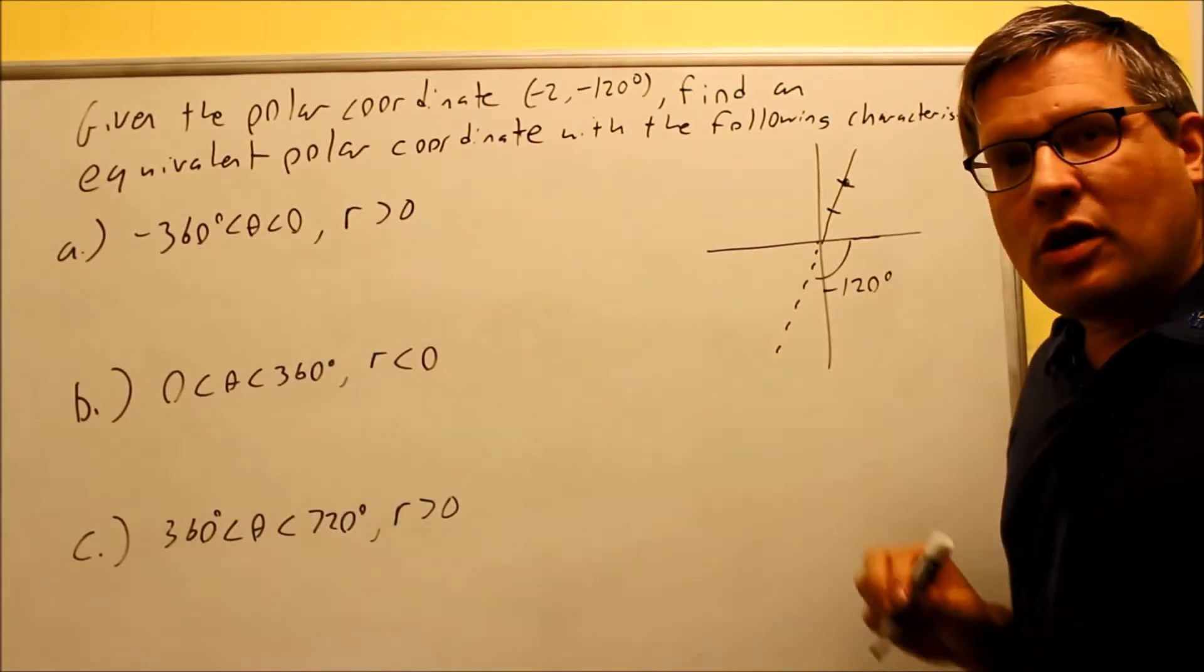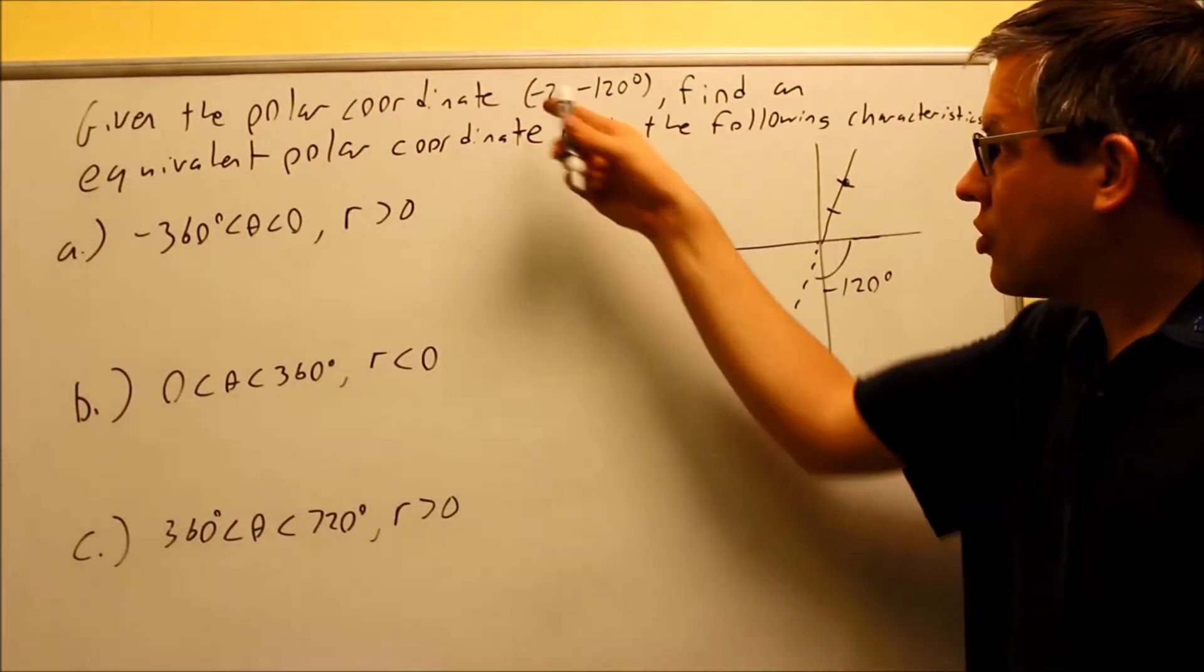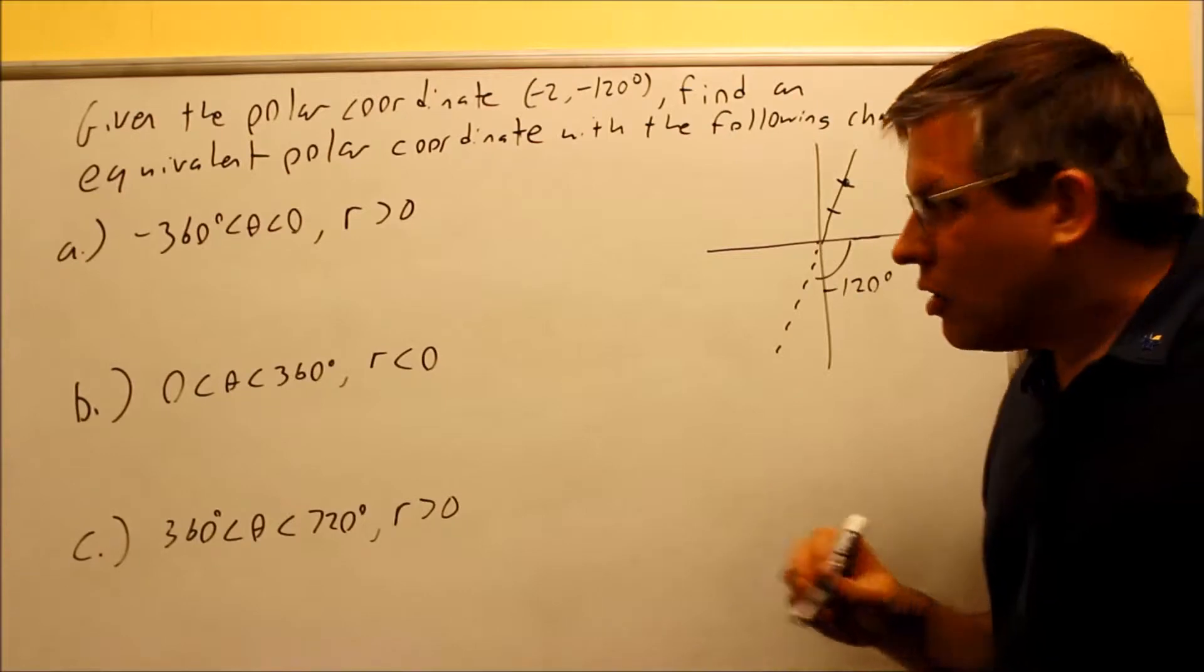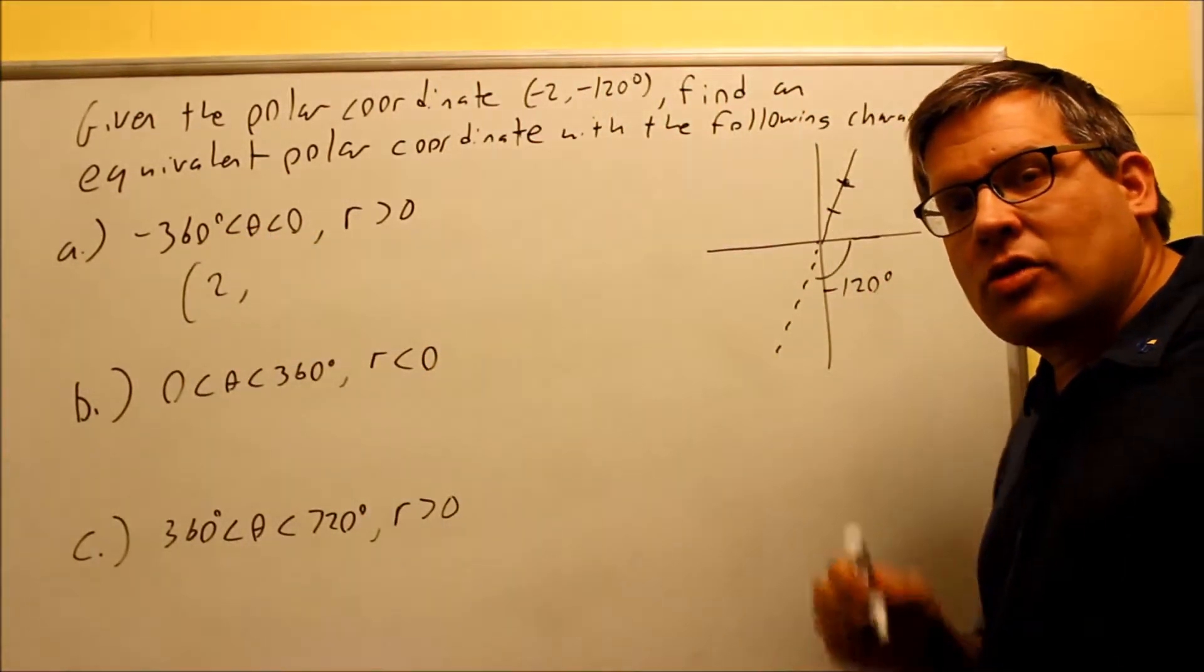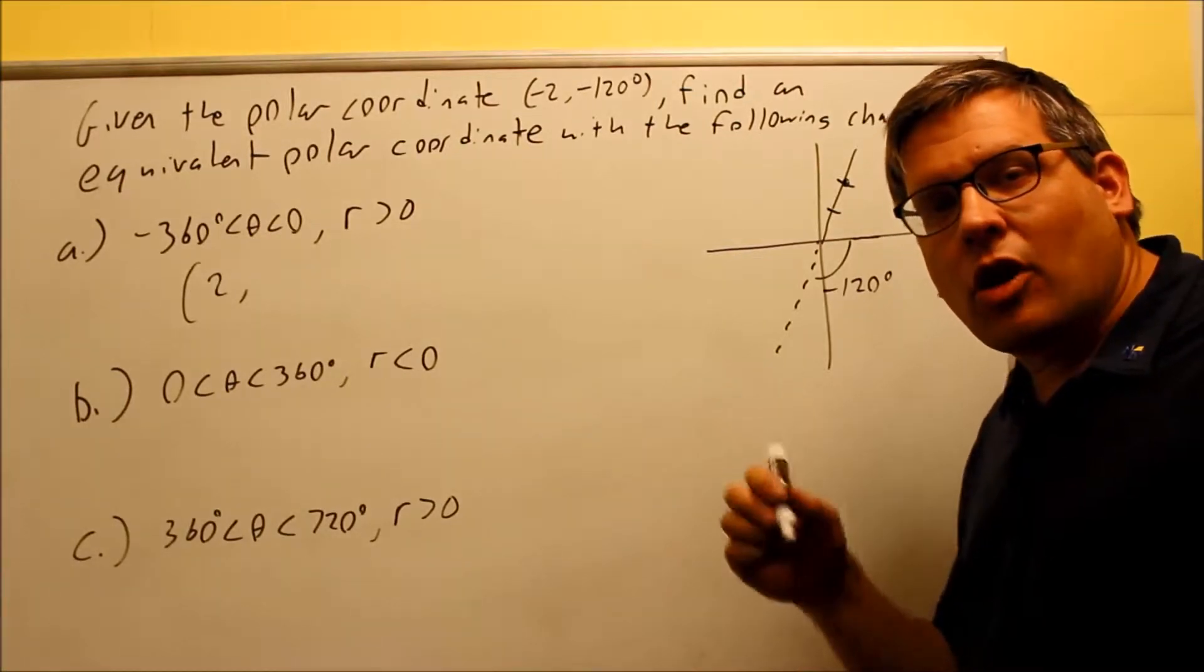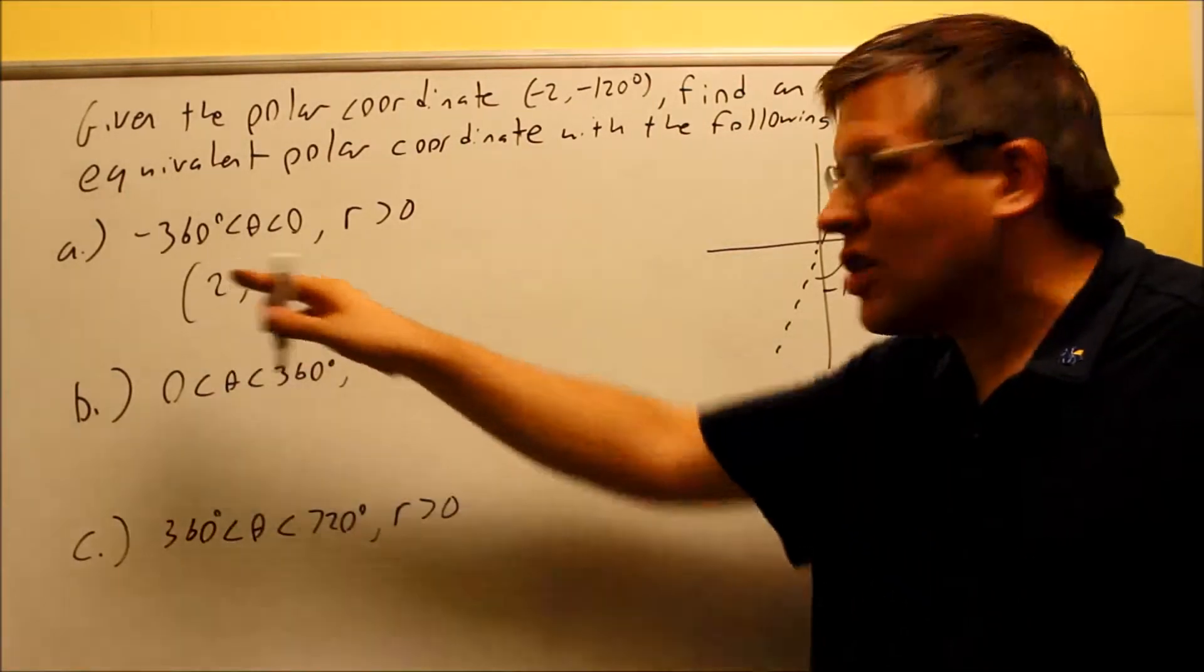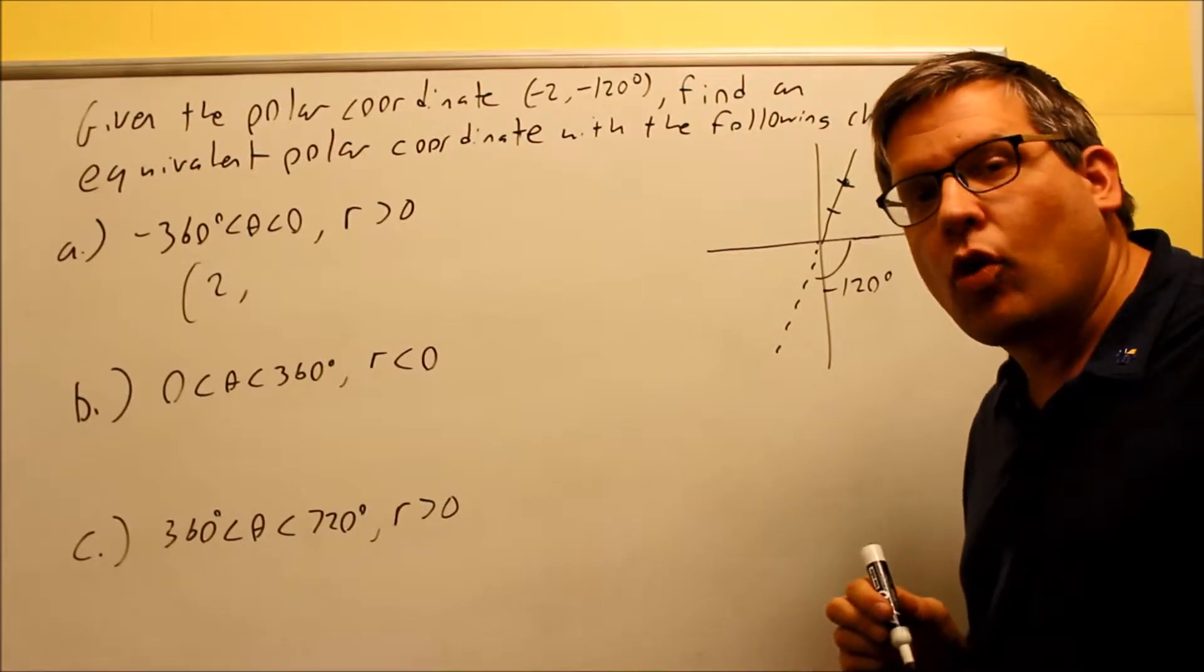My r needs to be greater than 0. Now my original r is negative 2, but I want to change this to positive 2. That means that I'm changing the sign of the r, so I need to use the formula that involves 180. Whenever you're changing the sign of the r, you're always adding or subtracting 180.